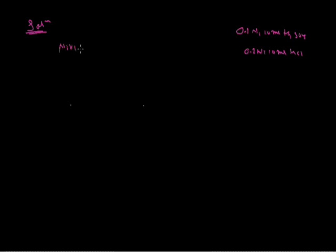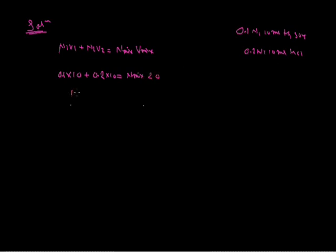Both are acids, so the formula is N1V1 plus N2V2 equals Nmix times Vmix, where Nmix is the total normality and Vmix is the total volume. First acid: normality is 0.1, volume is 10 ml. Second acid: normality is 0.2, volume is 10 ml. Total volume is 10 plus 10 equals 20 ml. So 1 plus 2 equals Nmix times 20, giving Nmix equals 3 by 20. This Nmix represents the concentration of H+ because the solution is acidic.